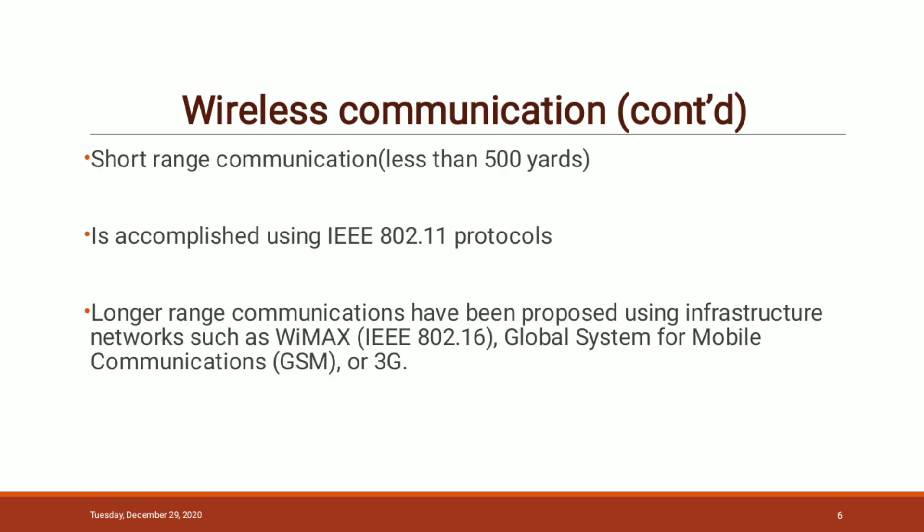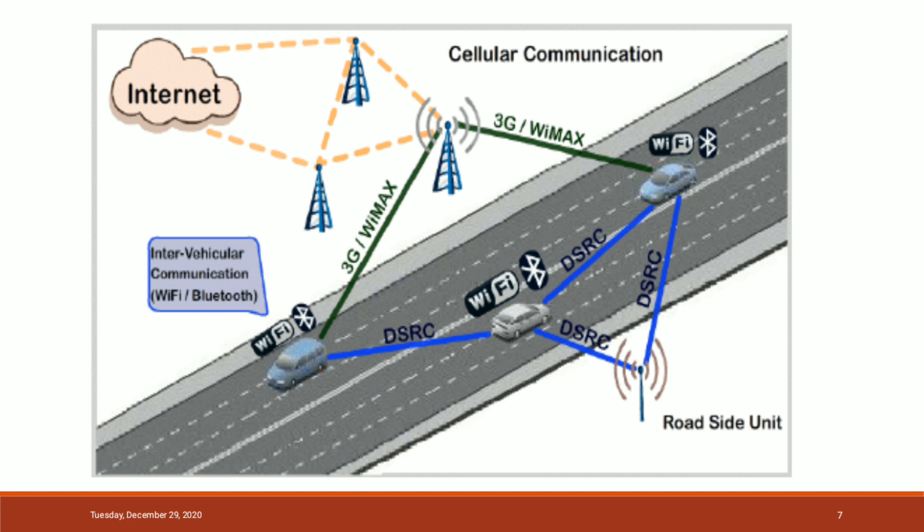Wireless communication system is used in two ways. The first is short-range communication for a communicating area less than 500 yards, and longer-range communication systems have been proposed using infrastructure networks such as WiMAX and GSM, that is the Global System for Mobile Communication. For dedicated short-range communication between vehicles, inter-vehicular communication devices such as Wi-Fi or Bluetooth are used, and for longer-range communication systems, 3G or WiMAX advances are used, which connect vehicles through the internet.